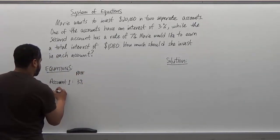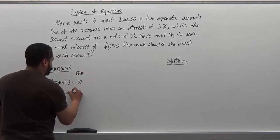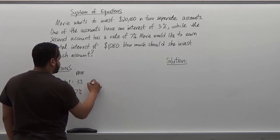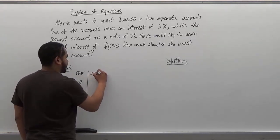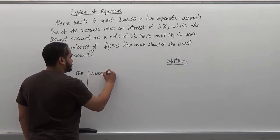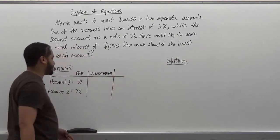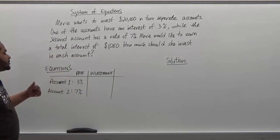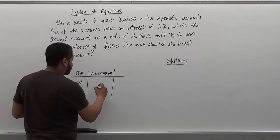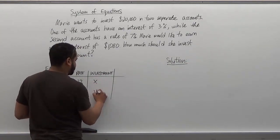Now the second account has a rate of 7%. Now the investment in each account is what's important. And since we have a system of equations we know we're going to have two different variables to indicate what the total amount is that they have. So the first one is just going to be x, the second one will be y.